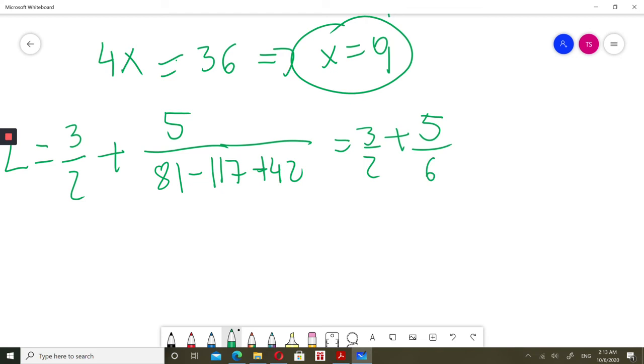So 3 over 2 plus 5 over 6. I need to have common denominator 6. That 5 will stay, this times 3. So left side equals 14 over 6, which equals 7 over 3.